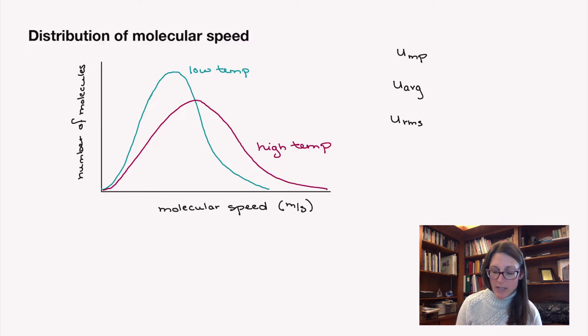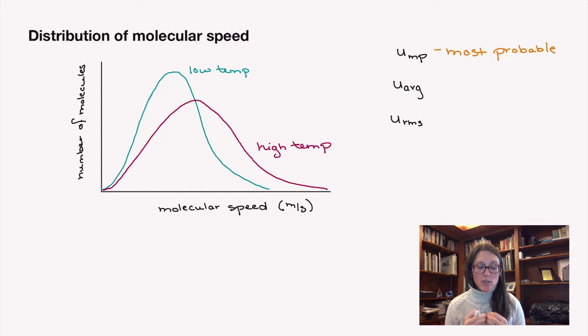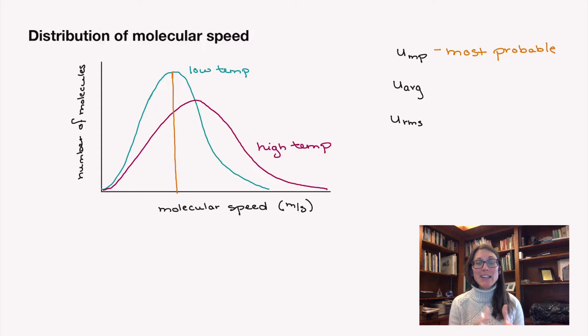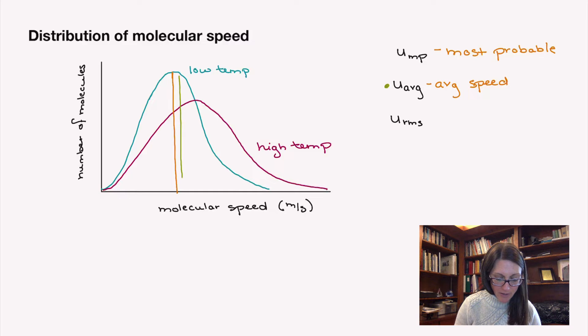Your most probable speed, and so the symbol that is given to this in chemistry land is U and then a lowercase mp. That lowercase u is actually going to be the symbol that's being used for speed in this particular version. And so our most probable speed corresponds to the highest tip of your distribution, where you have the most molecules with a particular speed. The average speed is going to be a little bit bigger. So your average speed, since the curve is not symmetrical, your average speed is going to be a little bit higher than your most probable speed.